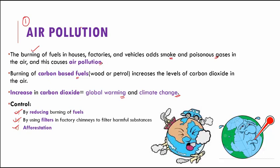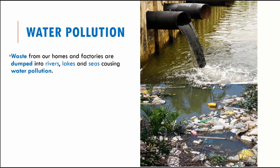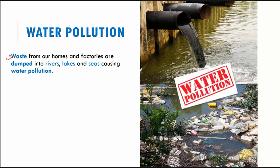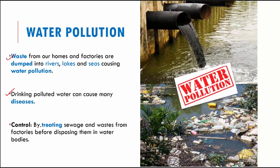The next type is water pollution. Water from our homes and factories is dumped into nearby rivers, lakes, and seas, causing water pollution. You can see how all the dirty waste from households is randomly thrown into water bodies. Drinking such polluted water can cause very serious diseases. We can control water pollution by treating sewage and other wastes before they are disposed into water bodies.